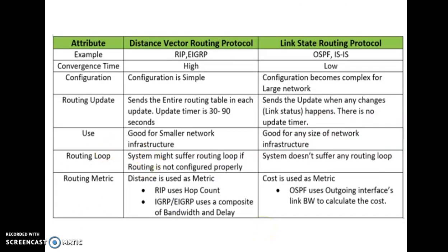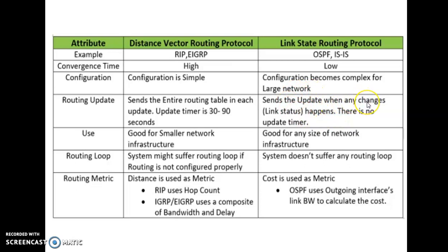Finally, comparing distance vector and link state routing protocols: the example of distance vector is RIP, while link state is OSPF. For convergence time, distance vector is high while link state is low. Configuration is simple for distance vector but becomes complex for link state, as it is dedicated to large networks. In distance vector, the routing table is updated every 30 or 90 seconds, while in link state, the routing table updates only when changes happen in the network.